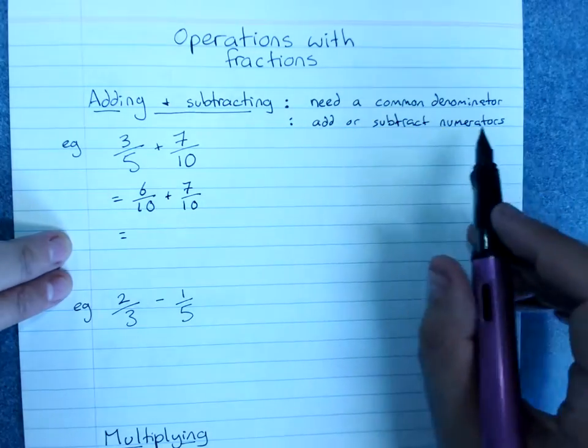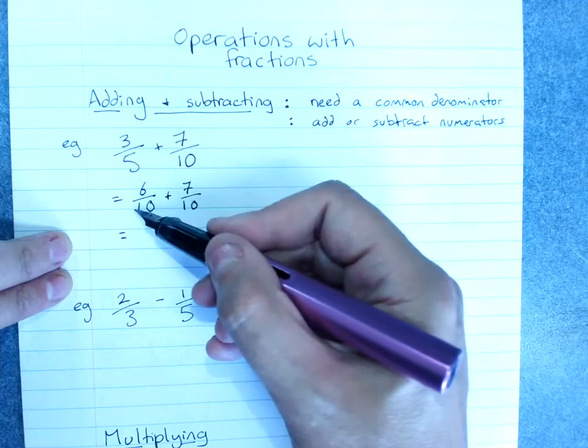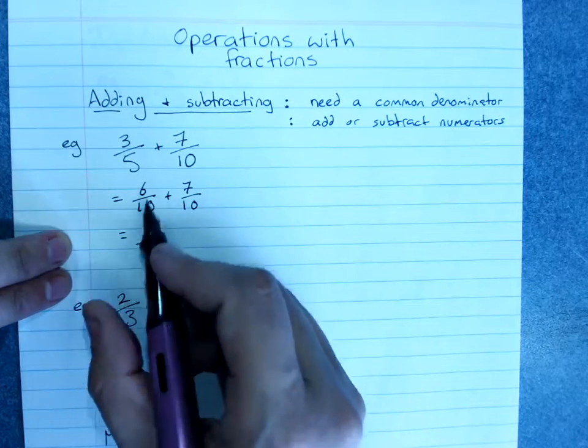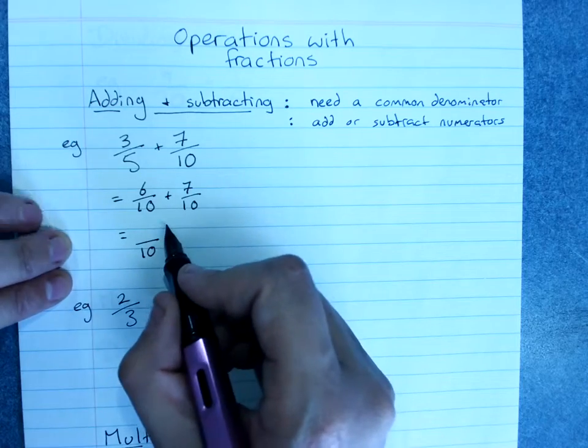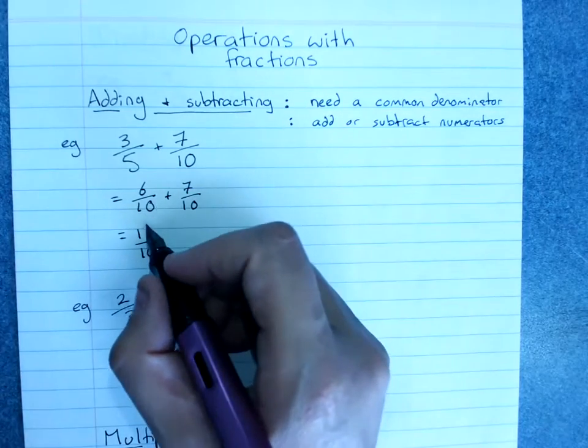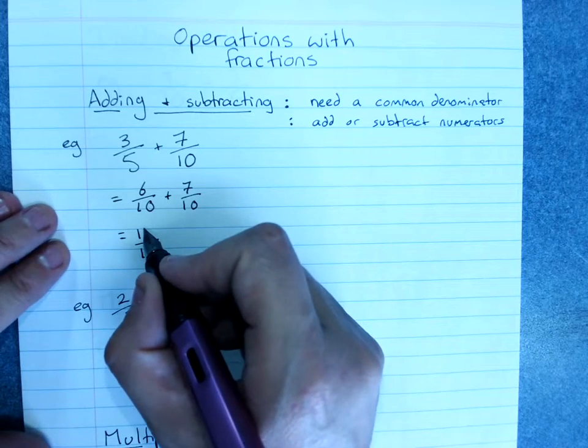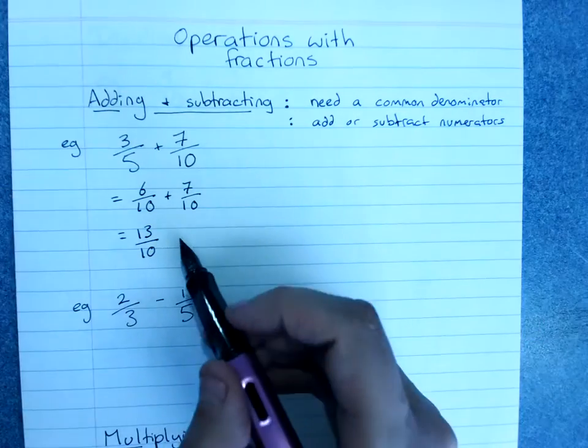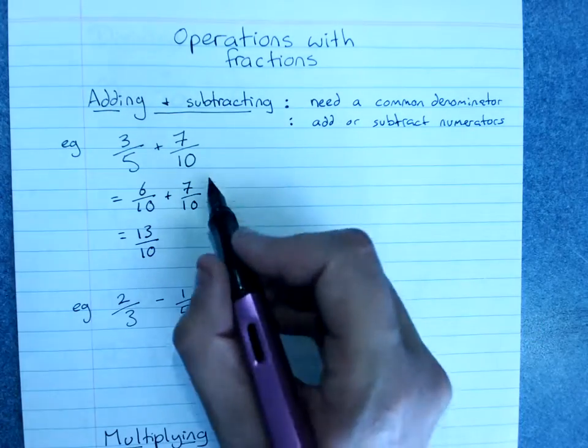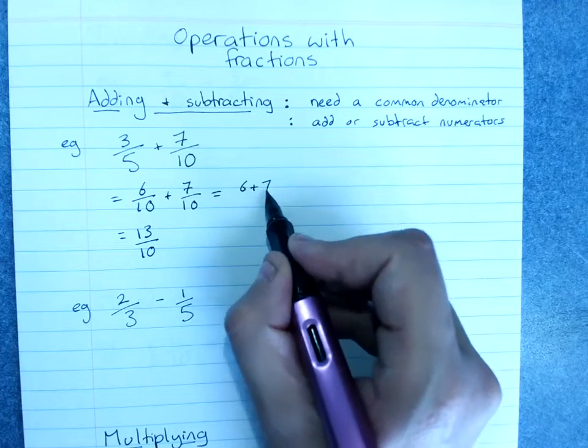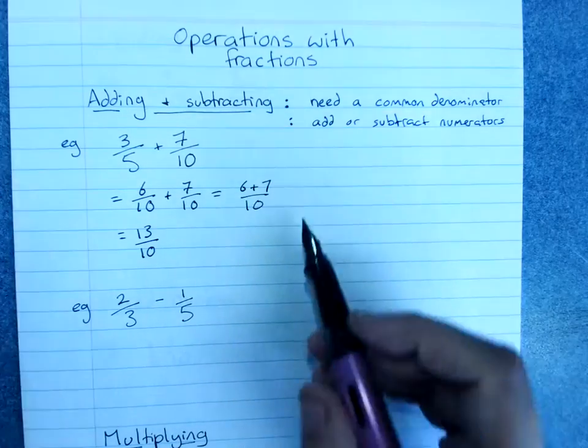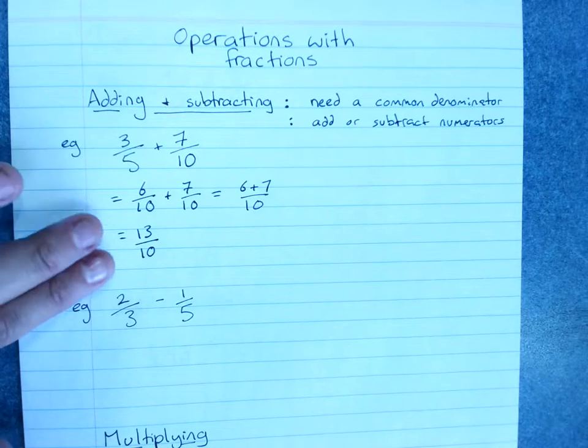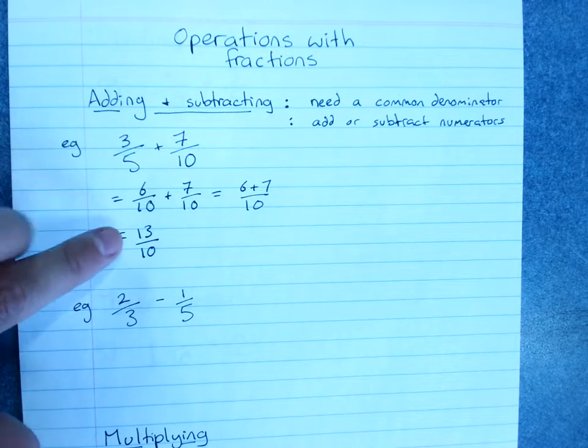We add or subtract the numerators. This is 6 tenths plus 7 tenths. My answer is going to be in tenths and 6 plus 7, so we have of course got 13 over 10. If you prefer you can rewrite this as 6 plus 7 over 10 to remind you that you don't add together the denominators. You're quite welcome to leave this as an improper fraction.